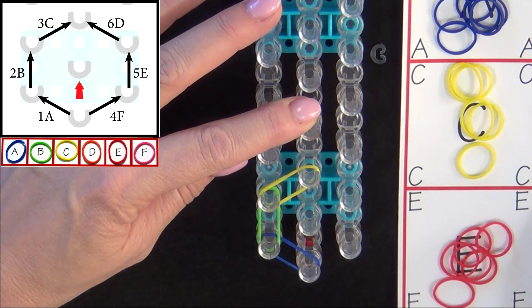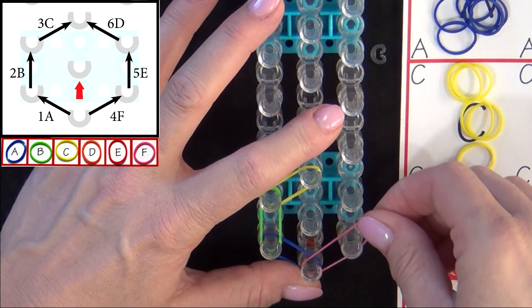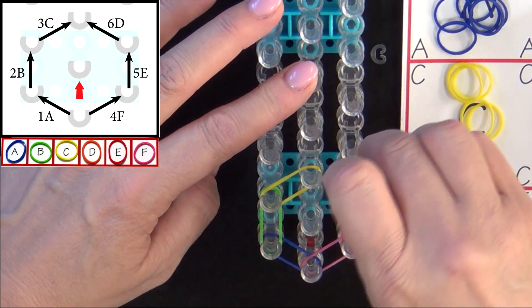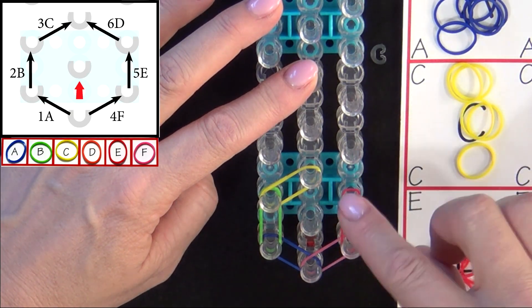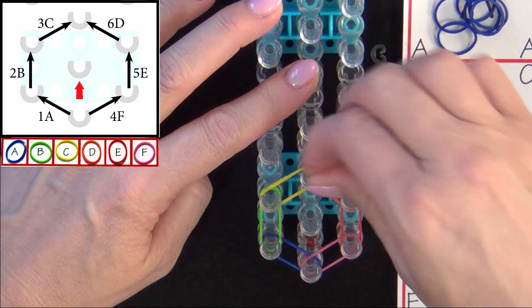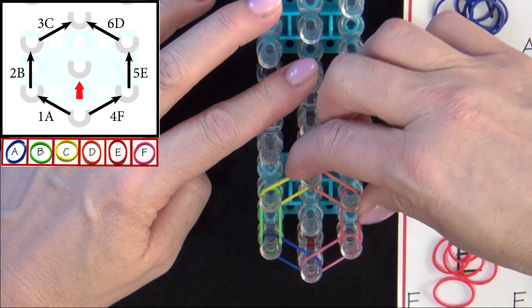Then you go back to the first pin and you'll place 4F, 5E, and 6D. And push those down.